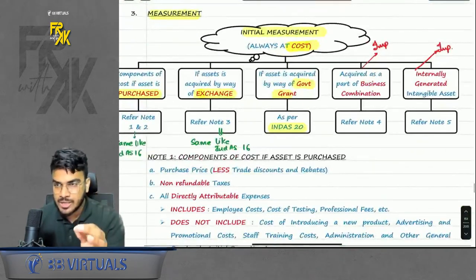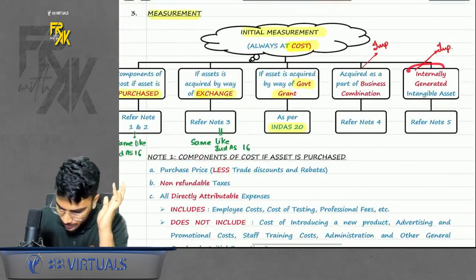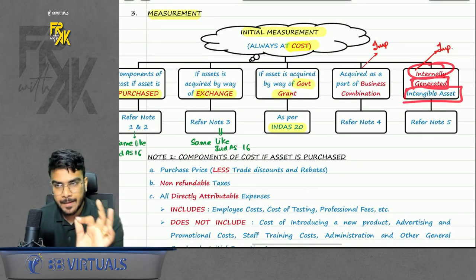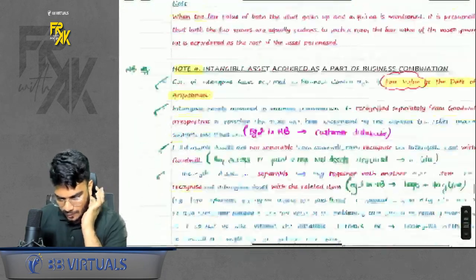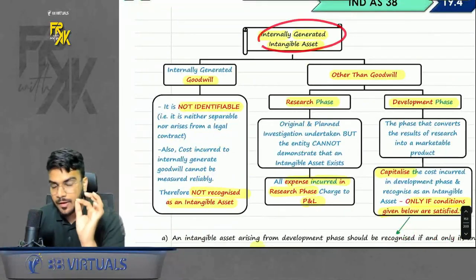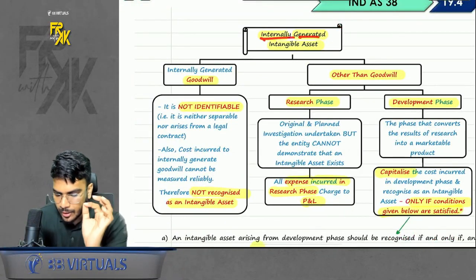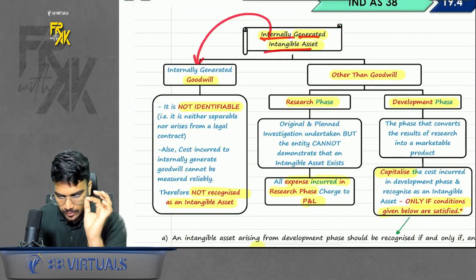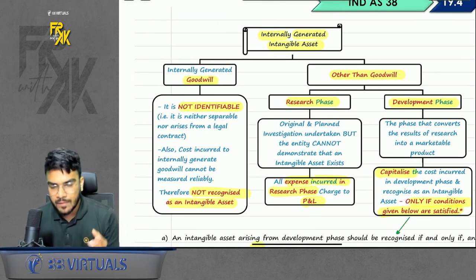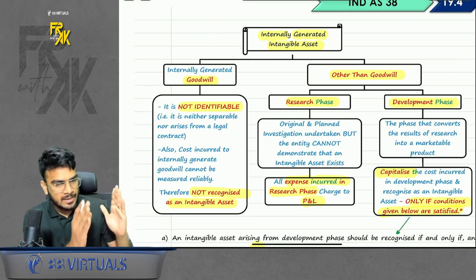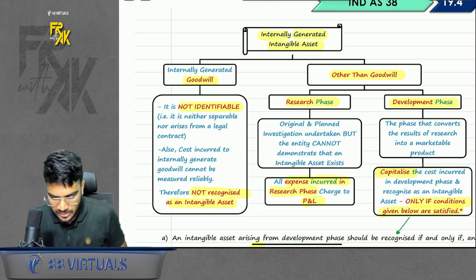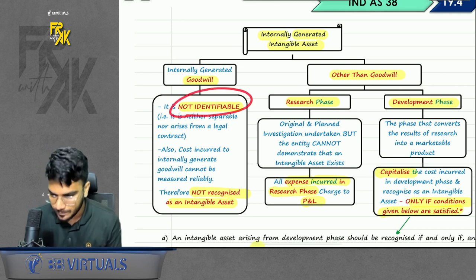Under initial measurement, there is the point of internally generated intangible assets. If there is any internally generated goodwill, you will not recognize it as an intangible asset. Goodwill if purchased is recognized; if internally generated, it is not recognized. Why? Because it is not identifiable.